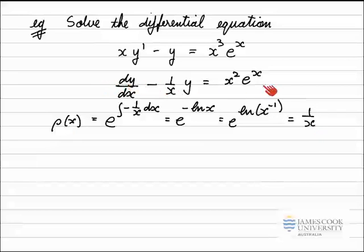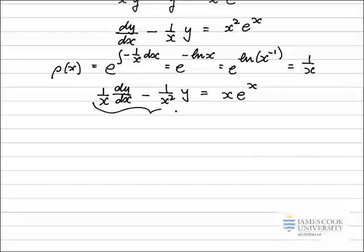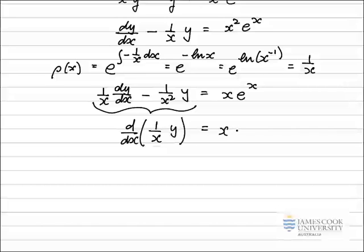The next step is to multiply the differential equation by the integrating factor 1/x. So 1/x squared times y will equal x times e to the x. Multiplying by 1/x is the same as dividing by x, so the x squared cancels to just an x here. If I've found the integrating factor properly, the left-hand side should be an exact derivative — that is, the derivative with respect to x of (1/x) times y — and that equals x e to the x.